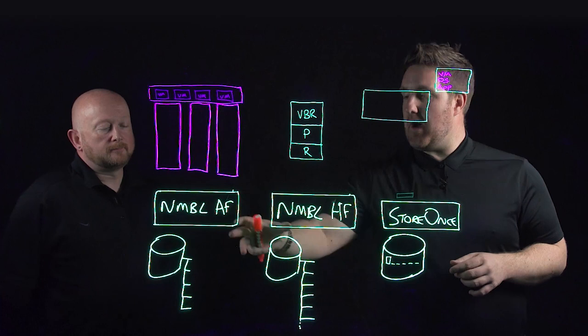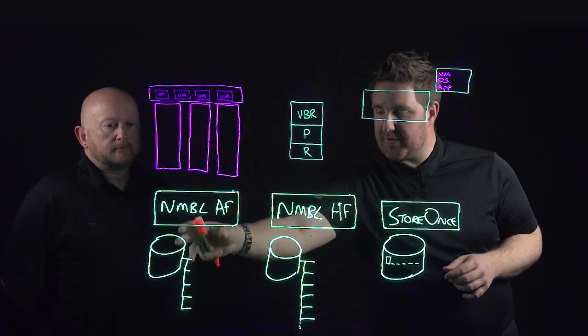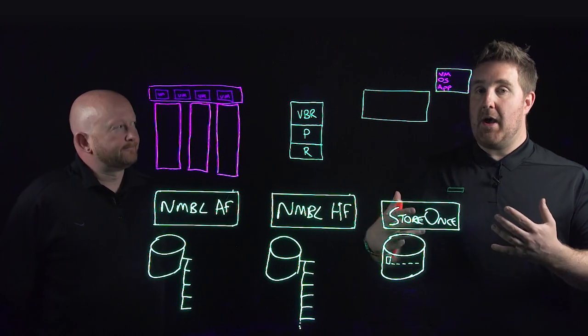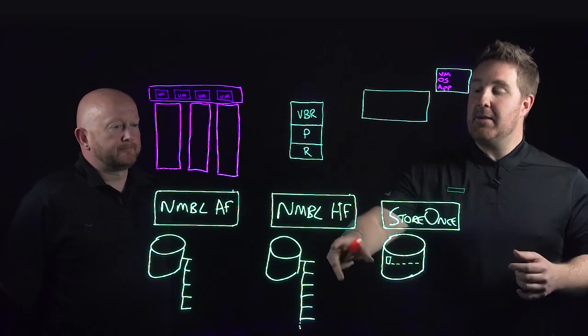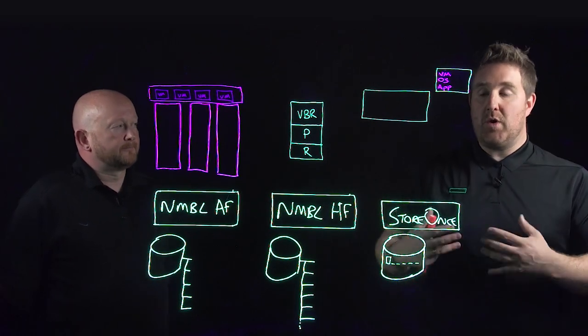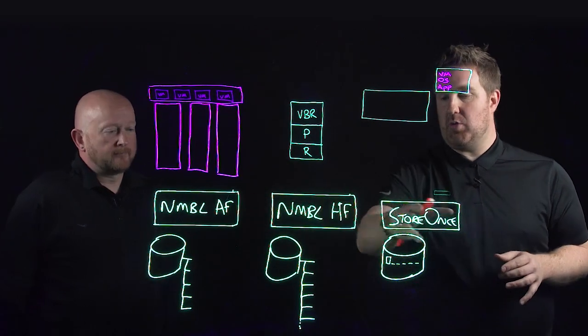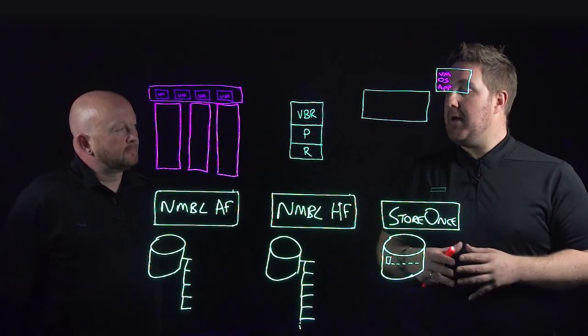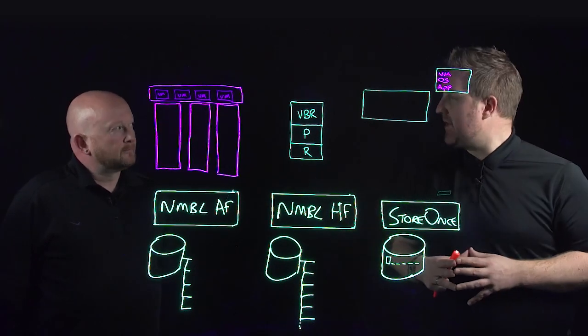You can see here we've got an object with some snapshots. We've got a Nimble Hybrid here which would be a lower and better cost per gigabyte with longer term retention, and then we've got a StoreOnce device here which would be our archive layer in a 3-2-1 scenario. Would you mind taking us through some of the processes and procedures behind this please?